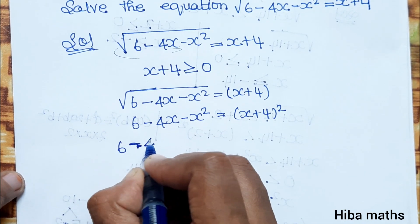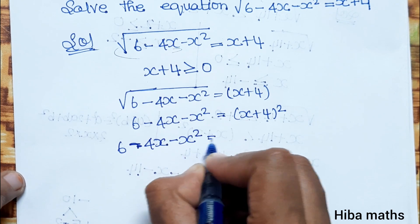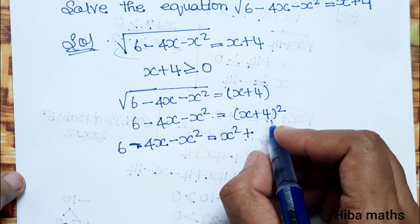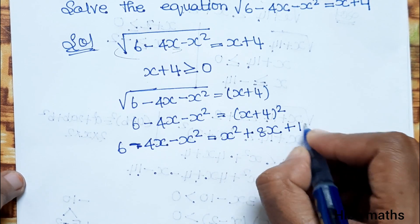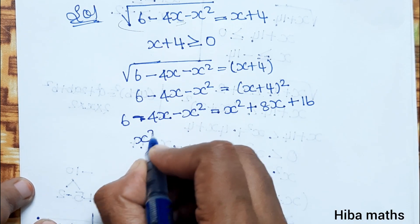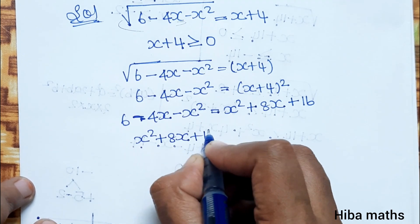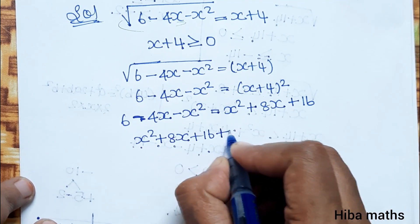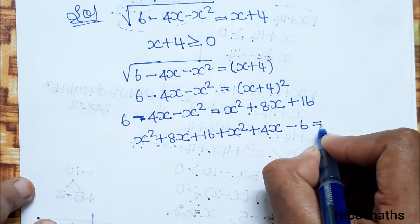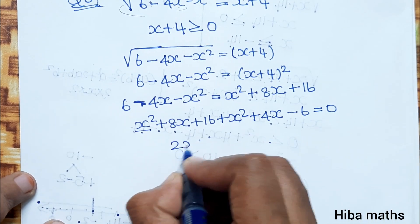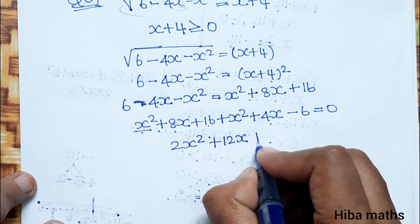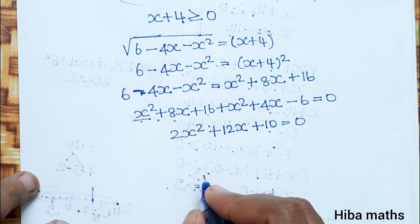So 6 minus 4x minus x squared is equal to x squared plus 2 times x times 4, which is 8x, plus 16. Now simplifying: minus x squared on the left and x squared on the right cancel terms, giving us 12x plus 16 minus 6 equal to 0.